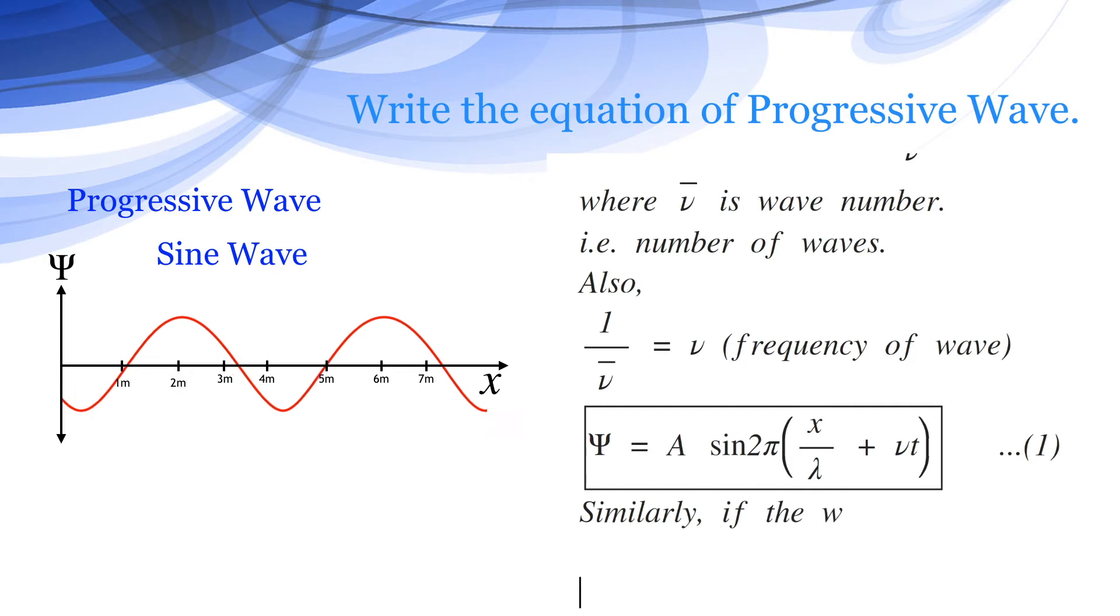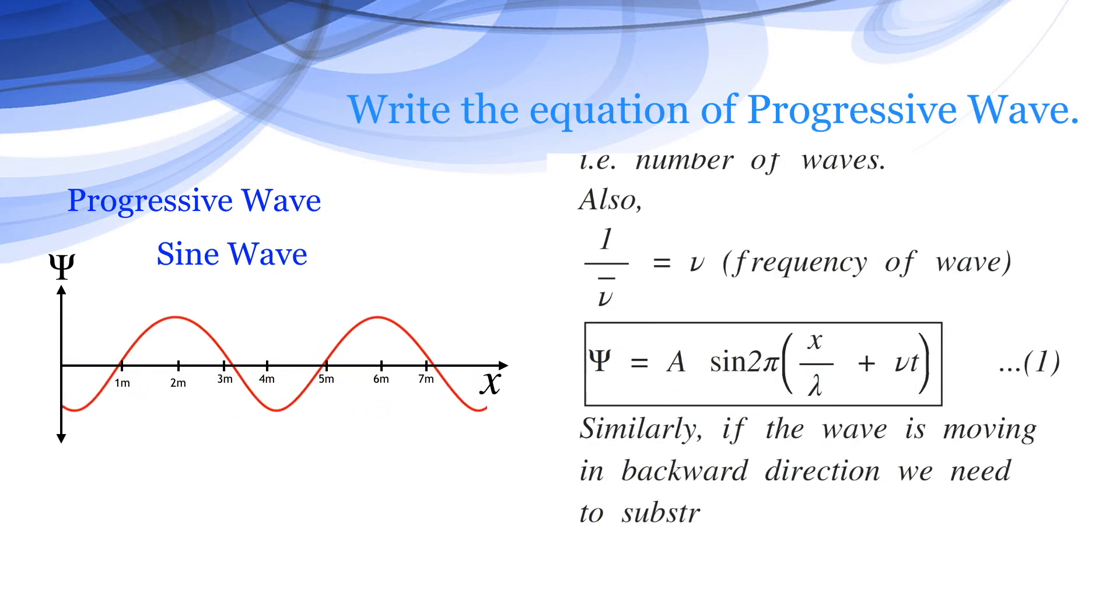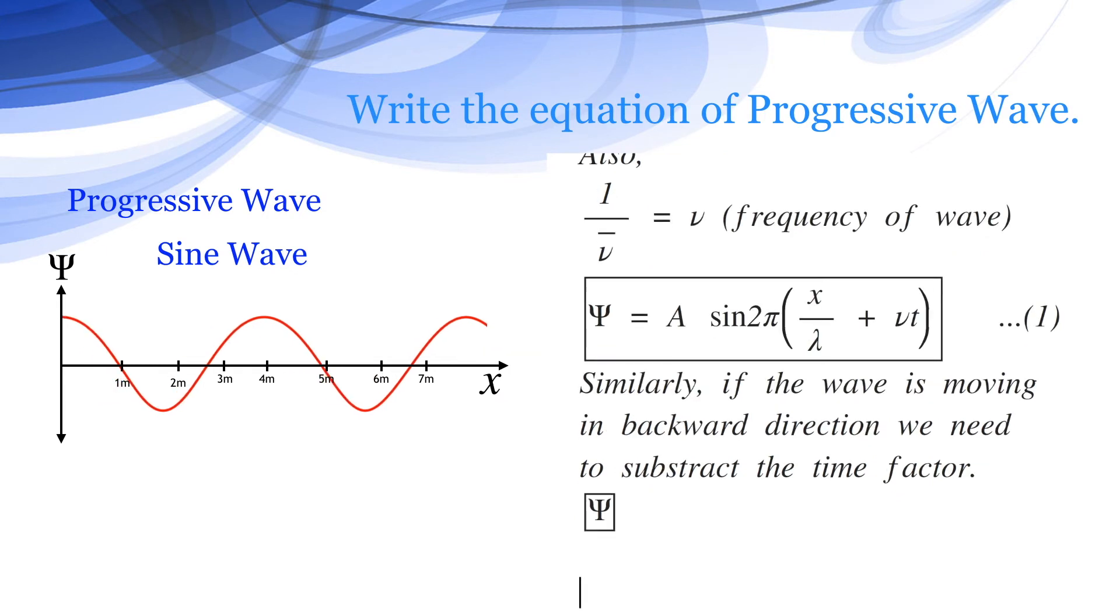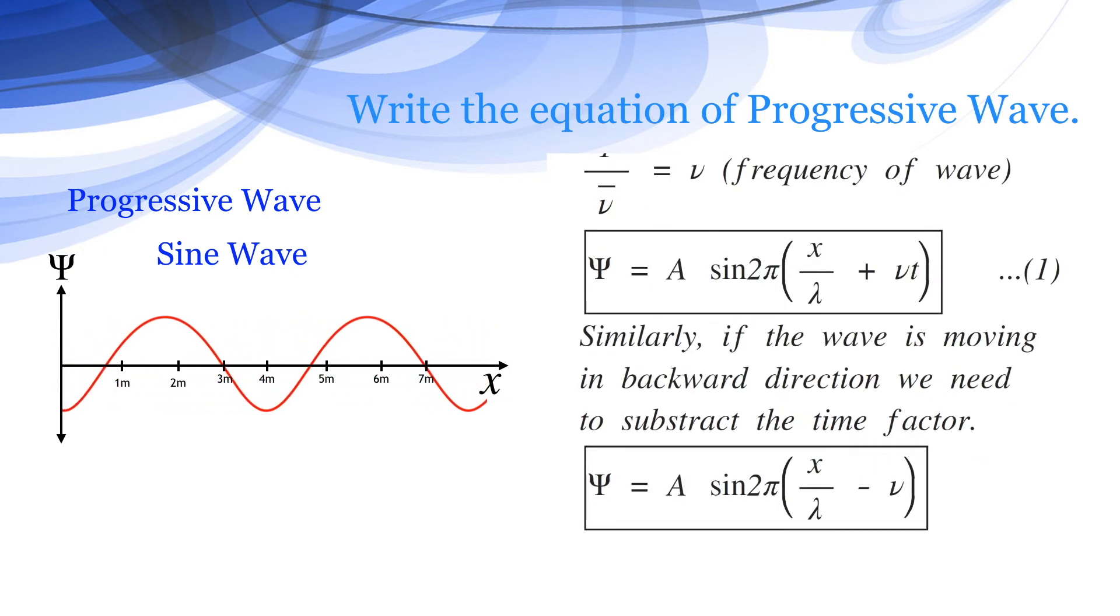Similarly, if the wave is moving in backward direction, we need to subtract the time factor. Therefore, the equation becomes psi equals A sine of 2π x by λ minus ν t.